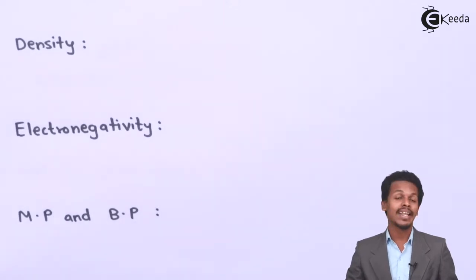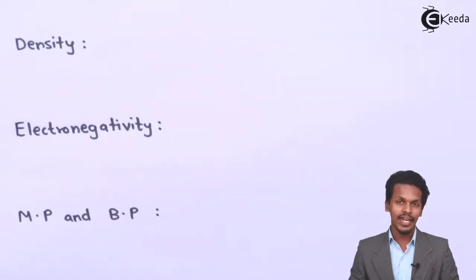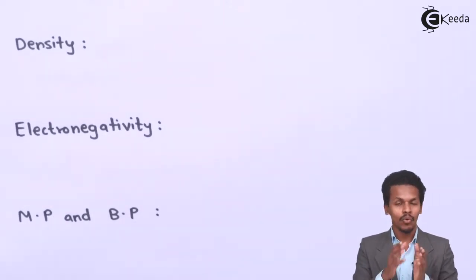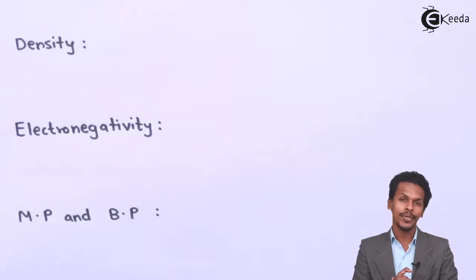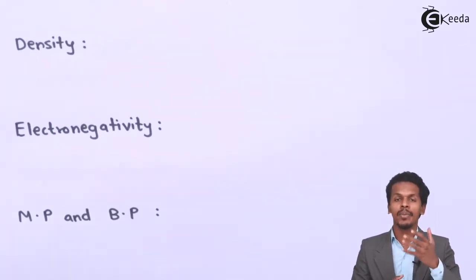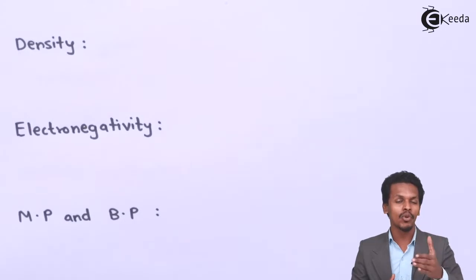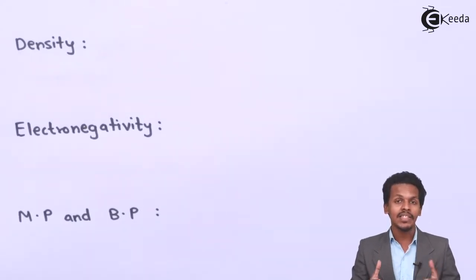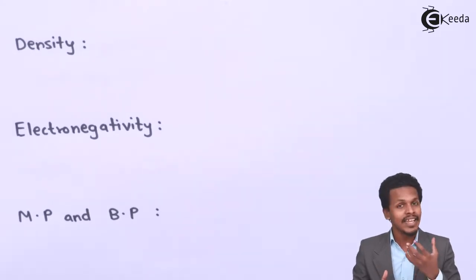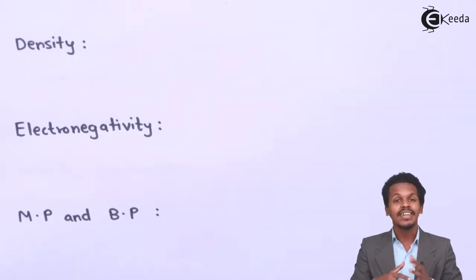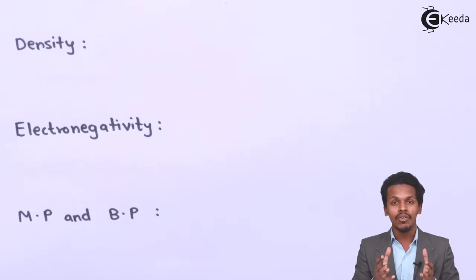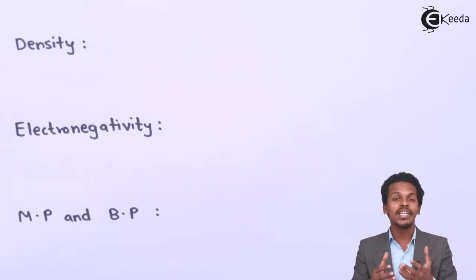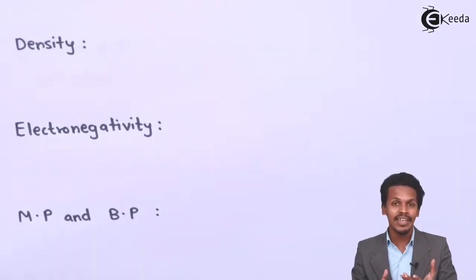The next point is about density. As we move from top to bottom, from oxygen to polonium, the atomic size increases, but this increase comes along with an increase in electrons as well. That is the reason the density of these elements also increases.